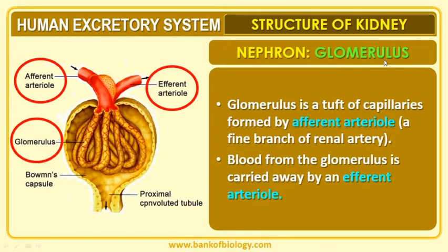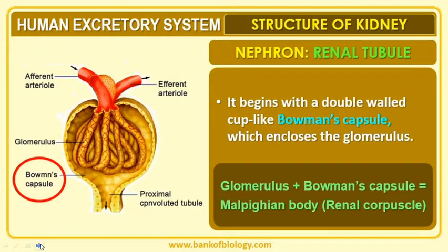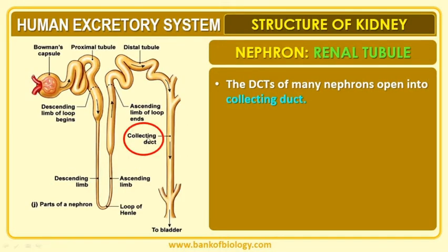Looking at the glomerulus: it has an afferent arteriole and an efferent arteriole. A tuft of capillaries is formed by the afferent arteriole. Blood reaches the glomerulus and is carried away by the efferent arteriole. The renal tubule begins with a double-walled cup-like structure called Bowman's capsule — where the renal tubule starts. Glomerulus plus Bowman's capsule together are referred to as the Malpighian body. Many nephrons open into a collecting duct, and urine is finally collected at the collecting duct.